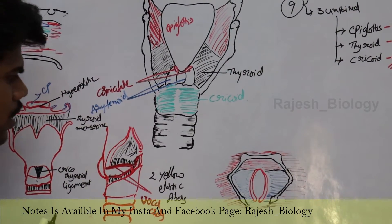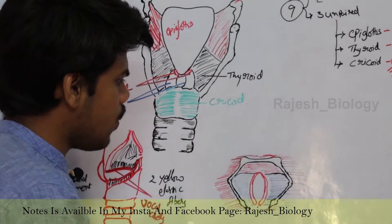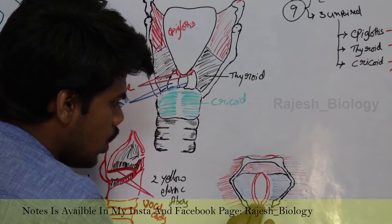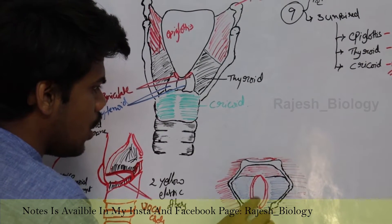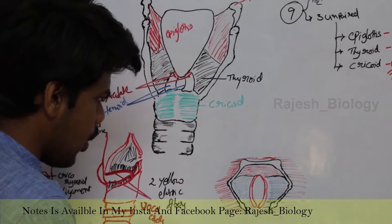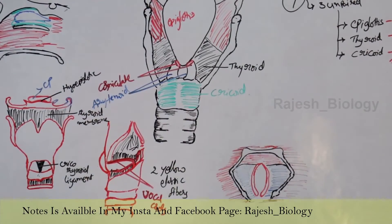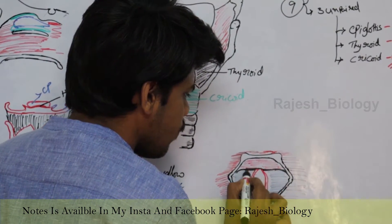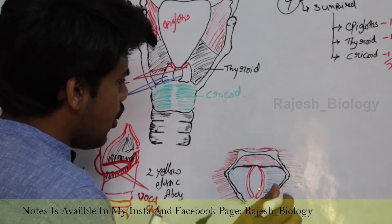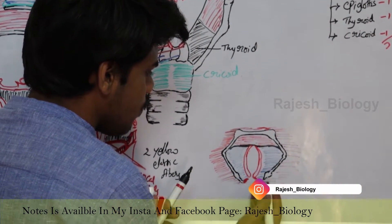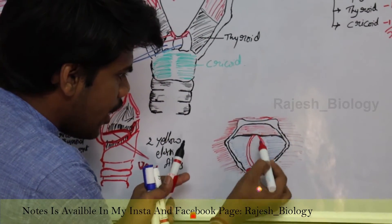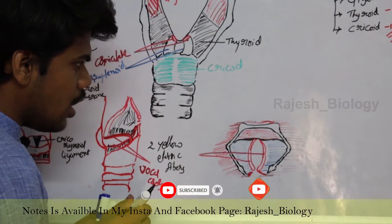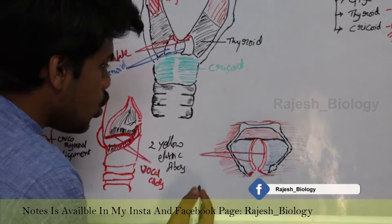Here is a clear picture from the upper view of the larynx. These two yellow elastic fibers are present between the thyroid and arytenoid. In between the thyroid and arytenoid, there are two yellow elastic fibers, and they are known as vocal cords — also known as true vocal cords.